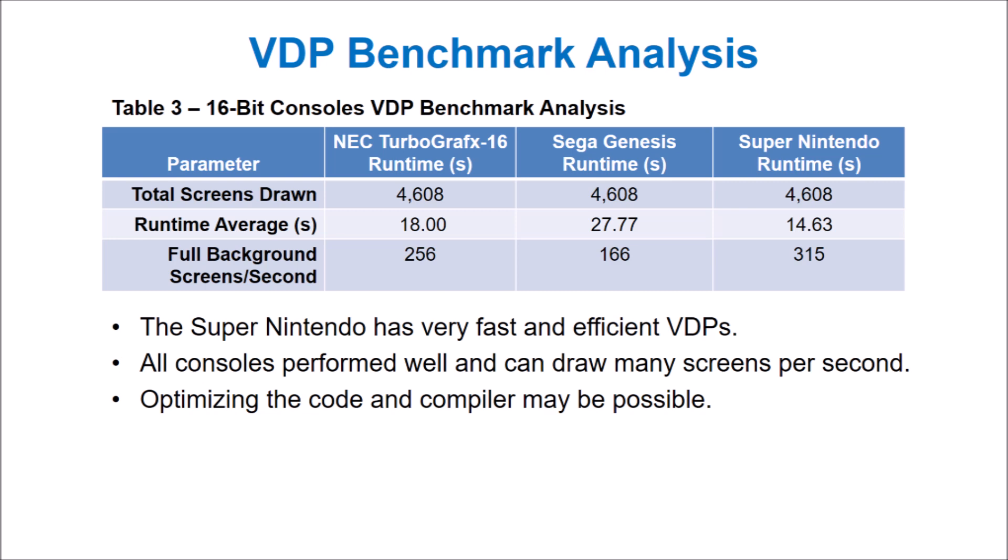It's important to remember that we are using a synthetic benchmark algorithm for this test, which would probably never be used in a real game. All three consoles performed very well overall. As shown in Table 3, they are able to draw an entire screen of background tiles at a high rate, giving the video processor and the main CPU plenty of time for other tasks like drawing sprites, running game logic, and so on. It's remarkable to think that these consoles were designed over 32 years ago. The fact that we're discussing them today shows their continuing legacy and impact on many generations of gamers.